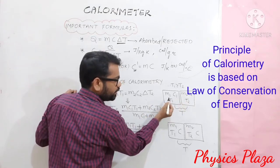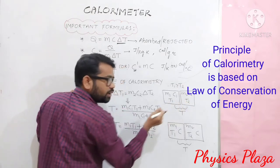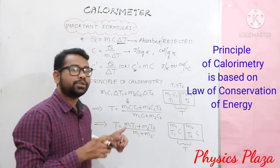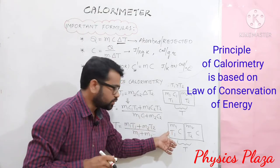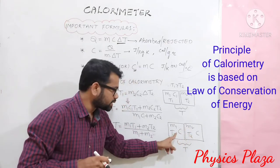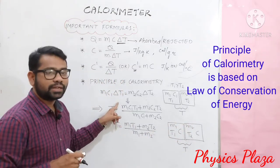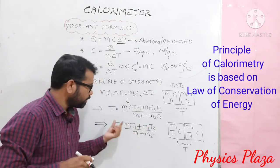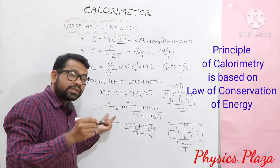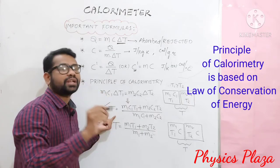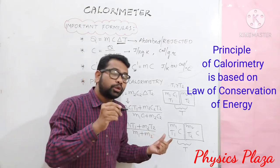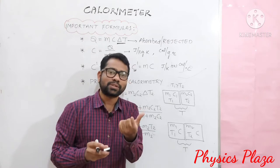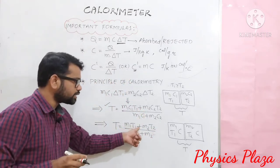This formula is used when two bodies of different masses, different specific heat capacities, and different temperatures are mixed. When the nature of the substance is the same — for example, hot water mixed with cold water — specific heat capacity c cancels out, and we use the simplified formula: t equal to m1 t1 plus m2 t2, divided by m1 plus m2.